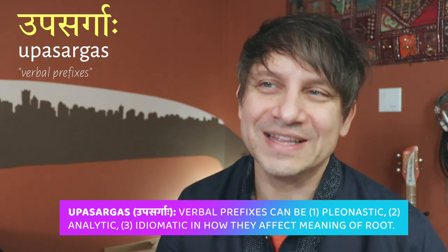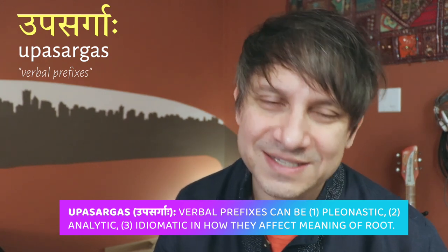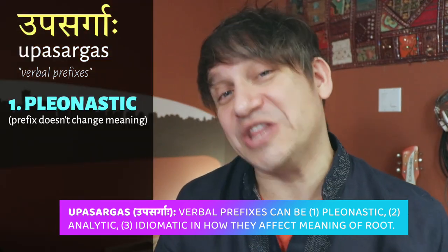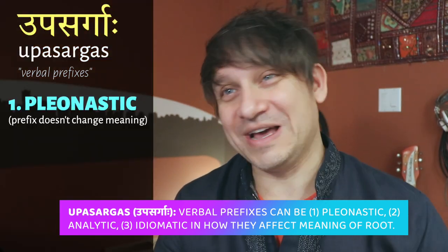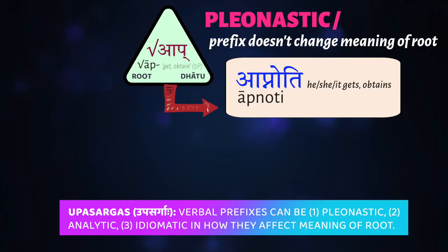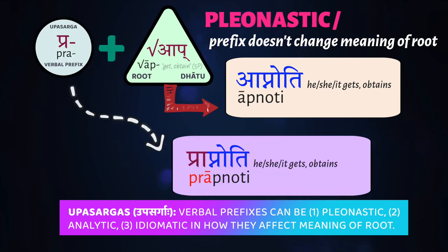There are three kinds of things that upasargas do to the meaning of the verb. One, they can be what's known as pleonastic — that means they don't actually change the meaning of the root very much. One example is the root ap, which means to get or obtain. If you add the prefix pra to ap, it doesn't change the meaning. Ap noti means 'he/she/it gets,' and pra-ap-noti also means 'he/she/it gets.'